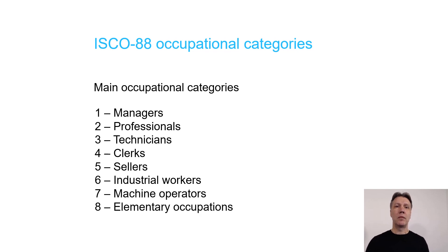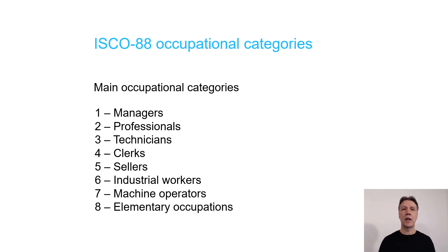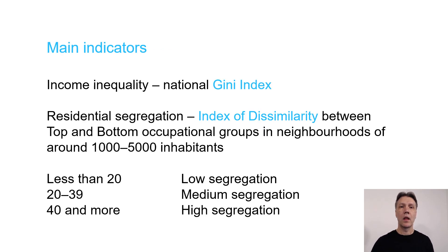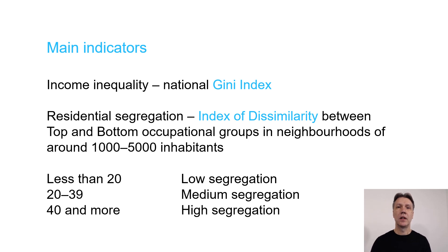The data we use are based on national censuses from the two last census rounds available, from 2000 and 2010. In each case study city, we have nine main ISCO categories of occupations — the standard classification — and our focus is on managers and elementary occupations, or as we say, high-income and low-income workers. We are using two sets of indicators in our study: we measure income inequality at the national level using the Gini index, and we measure residential segregation with the index of dissimilarity, which shows the difference of residential distribution between high- and low-earning occupations.